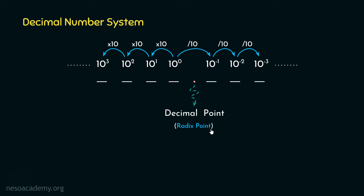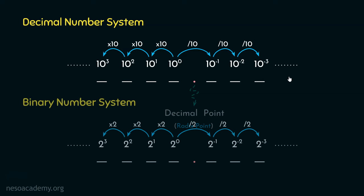This point is more commonly known as the radix point. Because apart from the decimal number system, for all different number systems, we can't really call it the decimal point — that wouldn't make sense. For those number systems, we call it the radix point. So similar to the decimal number system's place values, in the binary number system the place values will be 2 raised to the power 0, 2 raised to the power 1, 2 squared, 2 cubed, and after the radix point: 2 to the power minus 1, 2 to the power minus 2, 2 to the power minus 3, and so on.